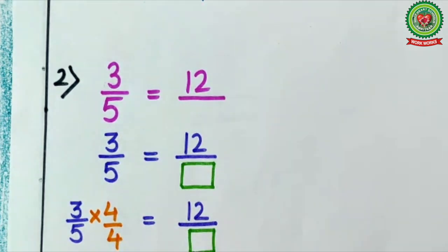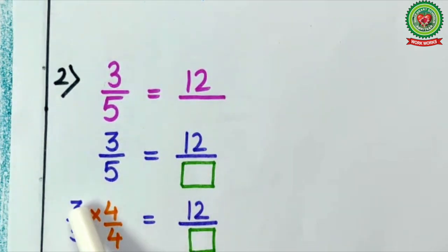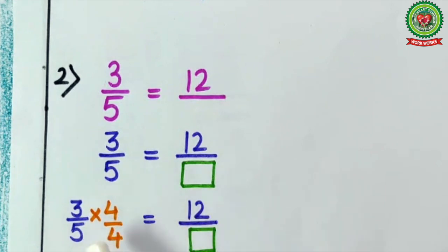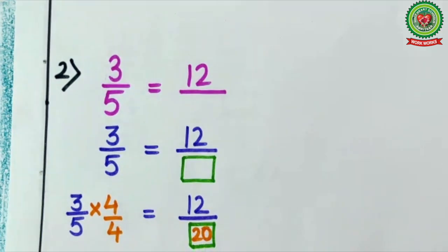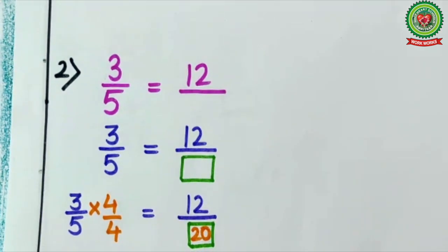So what will come? 3 times 4 is 12, and 5 times 4 is 20. So what will come in the denominator? 20. Therefore 20 is our answer.